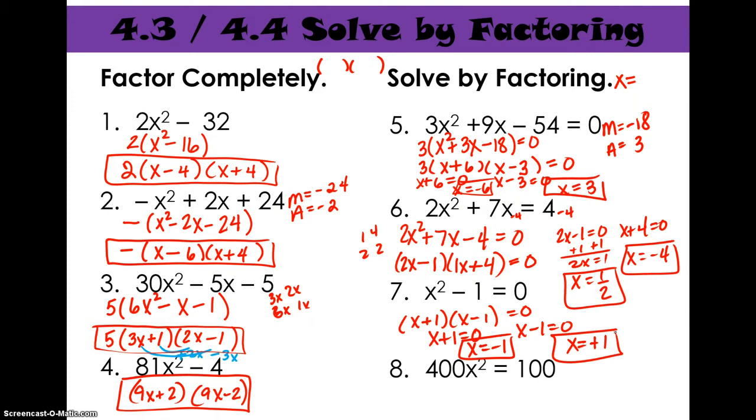Number eight, 400x squared equals 100. Again, we need to be equal to zero. So we're going to subtract 100. So we have 400x squared minus 100 equals zero. Now this one, there's two different ways you could go about it. Those are both perfect squares, so you do have DOTS. You also have a GCF of 100 you can take out. Either way you do it is fine.